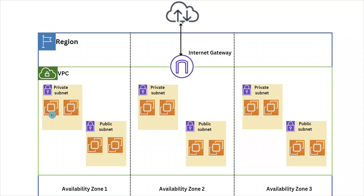If your resources in a public subnet need to talk to the outside world, they do so using this internet gateway. Your actual resources — like EC2 instances or RDS databases — will be present inside a subnet, either public or private depending on your use case. Internet-facing application servers are deployed in a public subnet, while backend systems like databases that only need to talk to your applications are deployed in a private subnet for extra security.